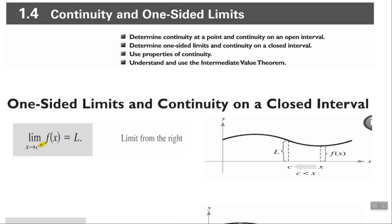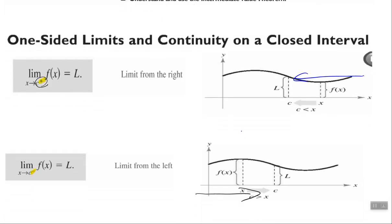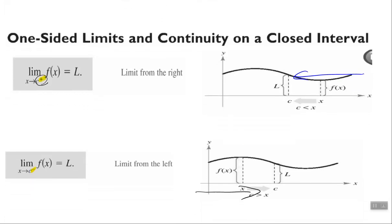In this lesson we'll look at one-sided limits and continuity on a closed interval. For one-sided limits, if you see a plus up there beside that C, that means we'll find the limit of the function as X approaches C from the right. If you see a minus up there, that means we want to find the limit of the function as X approaches C from the left.